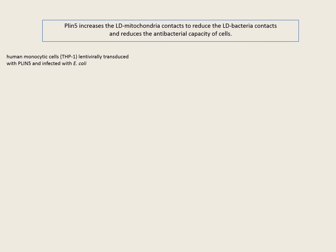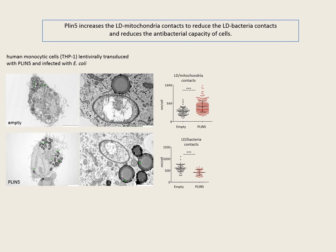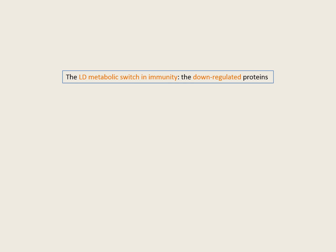What are the consequences of the uncoupling during infection? We expressed Plin-5 in human monocytic cell lines and infected them with E. coli. The presence of Plin-5 increases contacts between lipid droplets and mitochondria, as expected, but importantly, the number of interactions between lipid droplets and bacteria were reduced, and the antimicrobial capacity was lower, with higher bacterial loads in infected cells expressing Plin-5. These results suggest that bacteria and mitochondria compete for the lipid droplet, and their disconnection improves the antibacterial capacity of cells. The analysis of downregulated proteins tells us about the importance of lipid droplets in the metabolic switch in immunity.